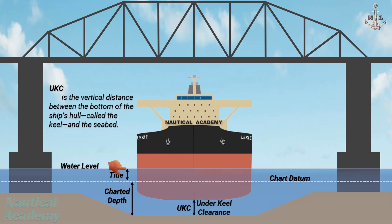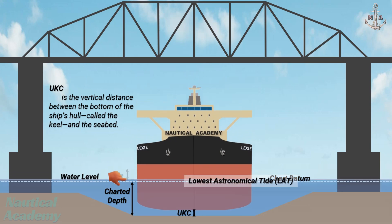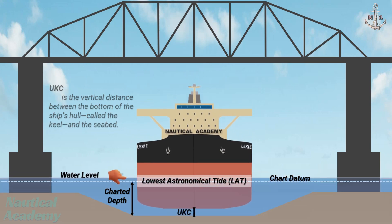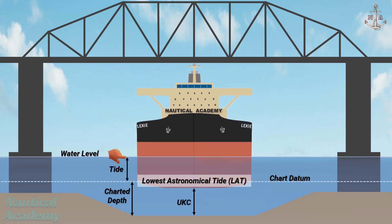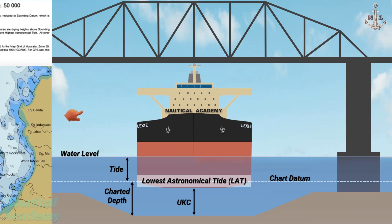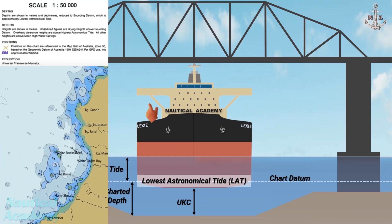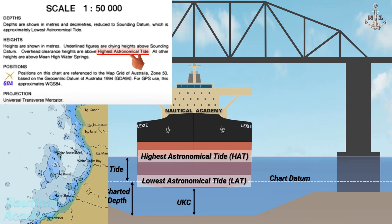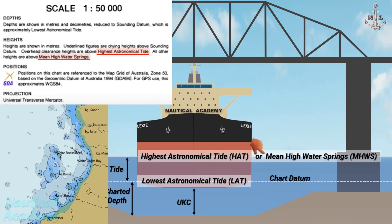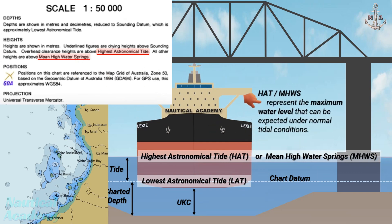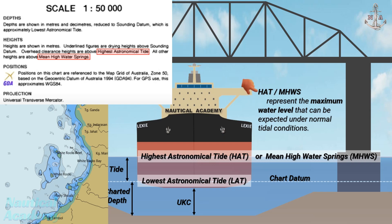If there's a reference for the lowest water level, there's also one for the highest water level. Depending on the chart we are using, this reference might be the Highest Astronomical Tide, or Mean High Water Springs. These represent the maximum water level that can be expected under normal tidal conditions. This is particularly important when navigating under overhead obstructions like bridges.